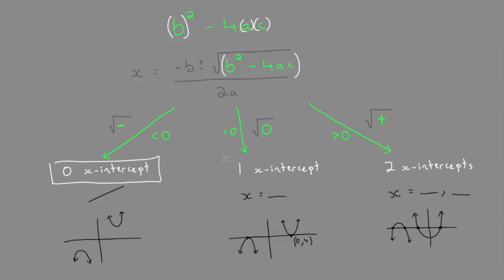We have one x-intercept when we calculate b squared minus 4ac and it equals zero. And finally, we have two x-intercepts when the discriminant is greater than zero.